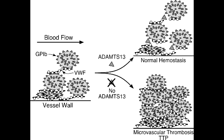Describe the pathogenesis of thrombotic thrombocytopenic purpura. In TTP, you have an increase in the large von Willebrand factor multimers. These lead to an increase in platelet aggregation at these von Willebrand factors, eventually leading to thrombosis.